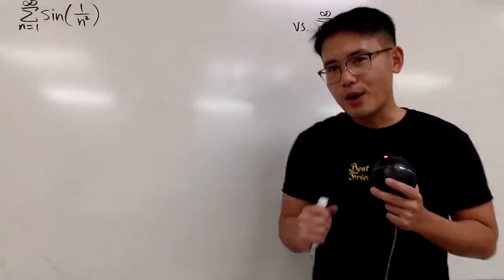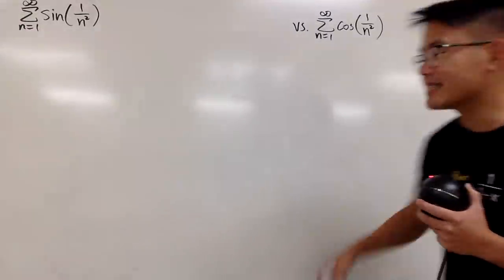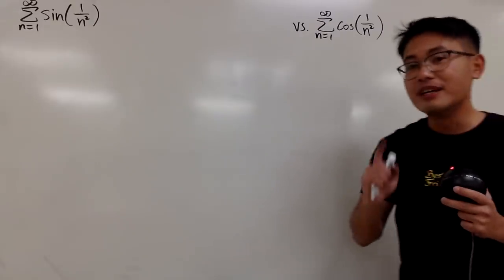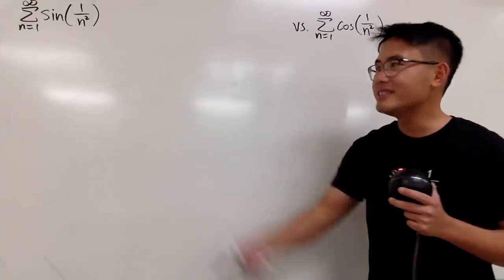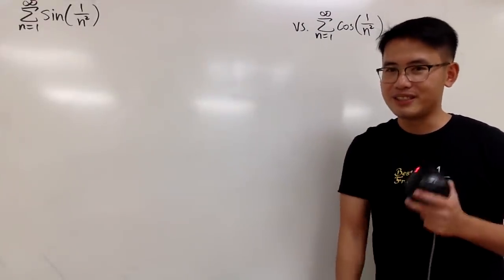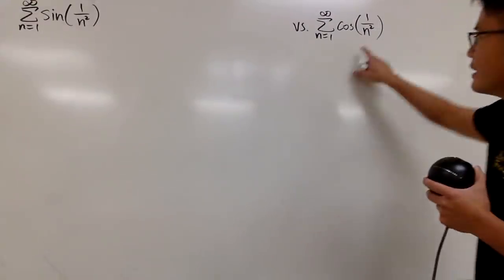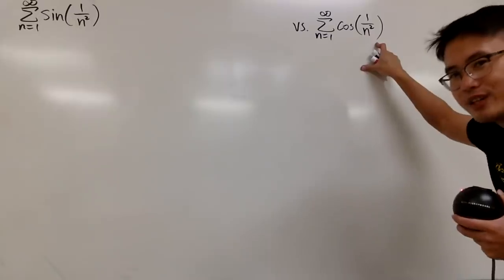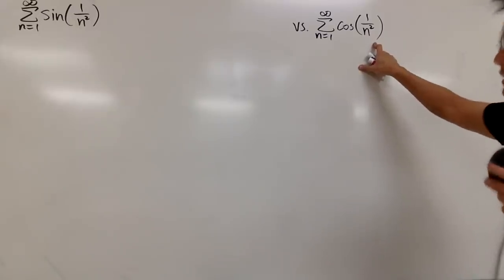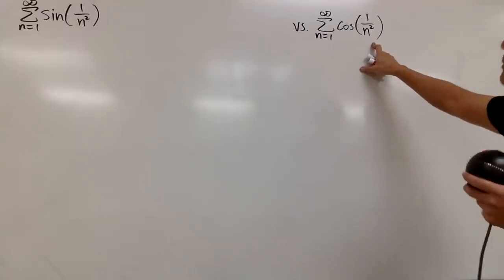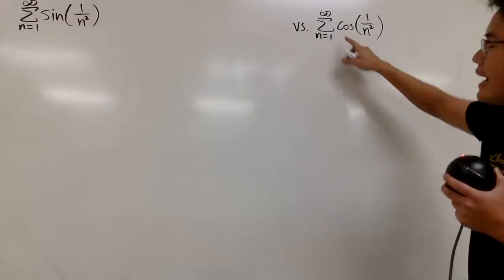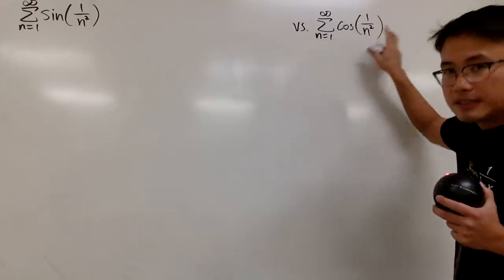This right here actually diverges, and that one over there converges. So let me show you guys how we can do this. It's actually the easier one, because notice that we have cosine and this expression.